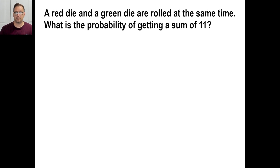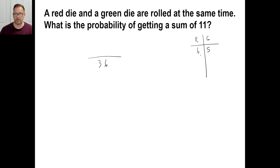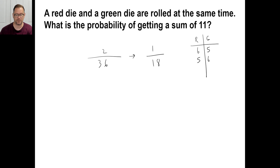What is the probability of getting a sum of 11 when rolling two dice? We already know there are 36 possibilities. What are the chances the sum is 11? One possibility is red is six and green is five. The other is red is five and green is six. What other two numbers add up to 11? Eight and three — but there's no eight on a die. Seven — no seven on a die either. So there are only two possibilities: two out of 36, which reduces to one out of 18.